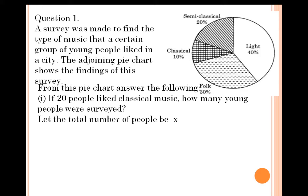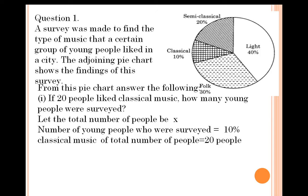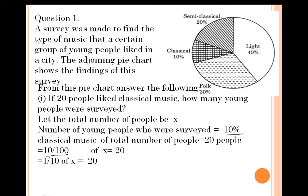Let the total number of people be X. Out of X people, the number who like classical music is 10%, and that equals 20 people. So 10% means 10 upon 100. So 10 upon 100 of X is equal to 20.